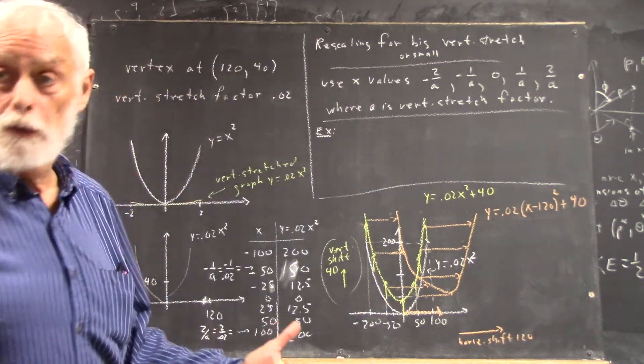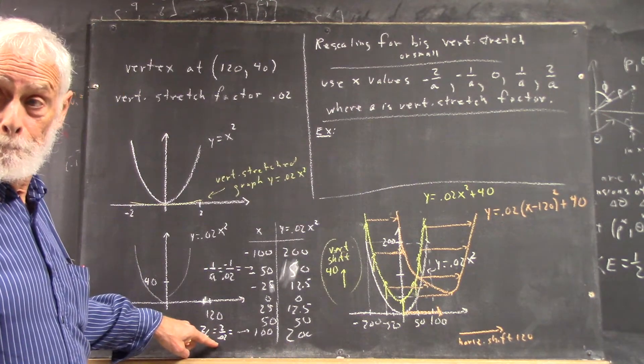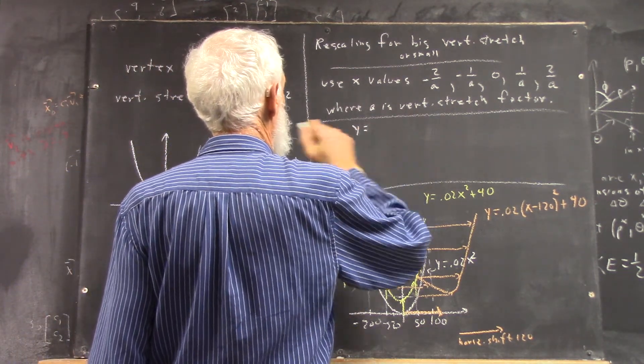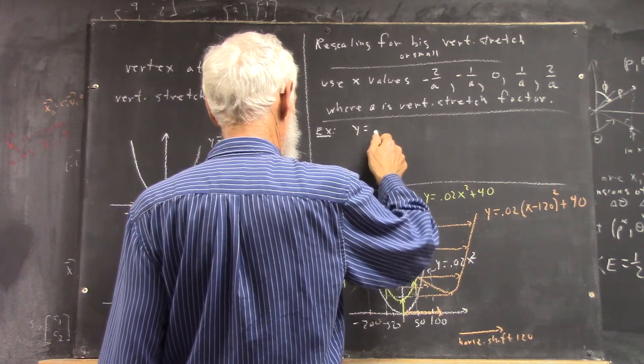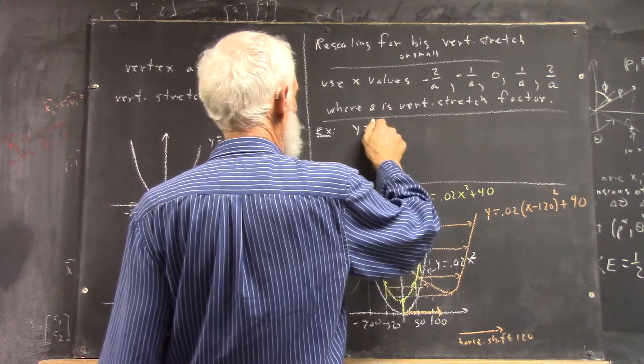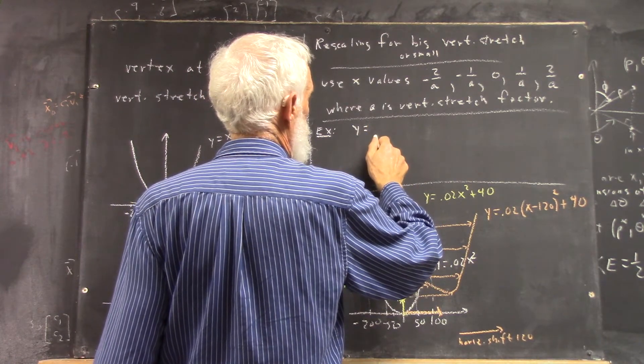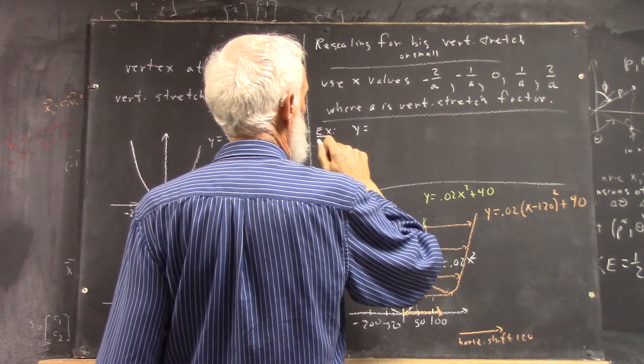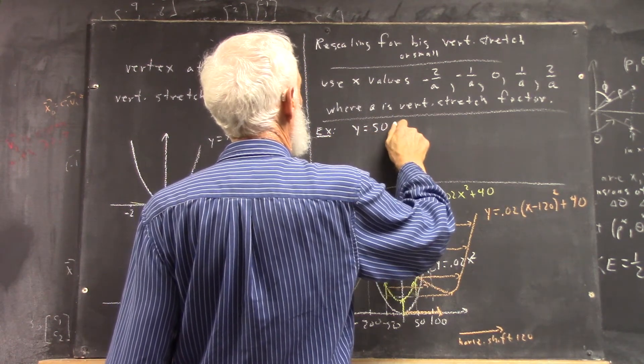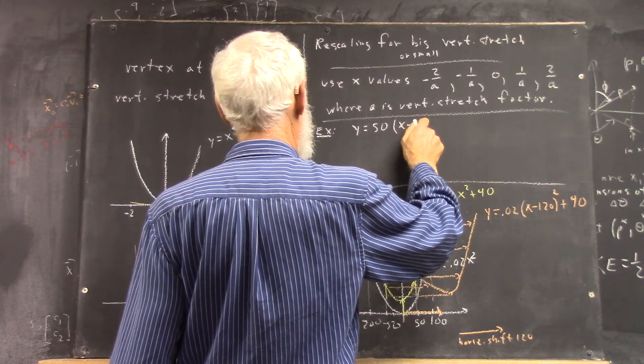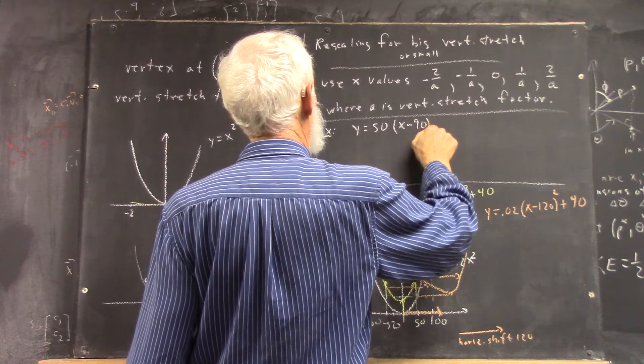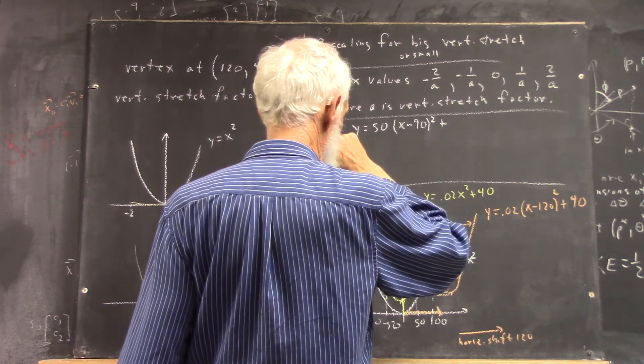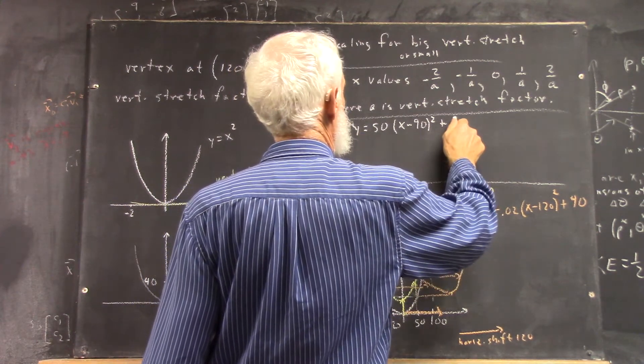And I'll do this for a big vertical stretch. I did it for a small vertical stretch, right? So let's say you have... I'm going to use y equals 50 times x minus 90 squared plus 70.